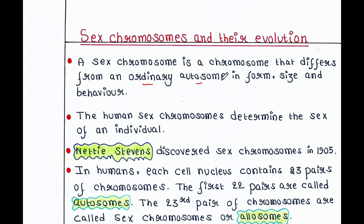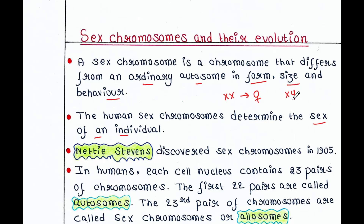The human sex chromosomes determine the sex of an individual. If a person has two X chromosomes, she will be female, and if a person has one X chromosome and one Y chromosome, he will be male. So basically, sex chromosomes determine the sex of that particular individual.